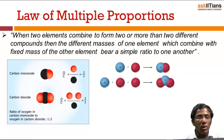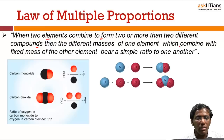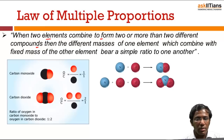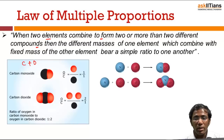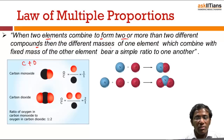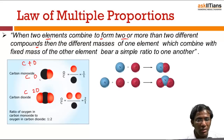The law of multiple proportions states that when two elements combine to form two or more different compounds, the different masses of one element which combine with a fixed mass of the other element bear a simple ratio to one another. For example, take carbon monoxide and carbon dioxide — two elements, carbon and oxygen, forming two compounds. In CO we have one carbon and one oxygen; in CO₂ we have one carbon and two oxygens. The carbon is fixed, and oxygen is the element with different mass.